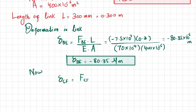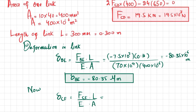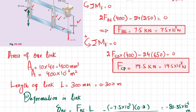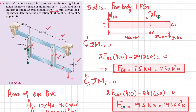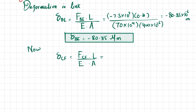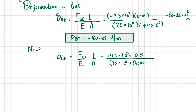Similarly, the deformation in link CF: δ_CF = F_CF × L / (E × A) = 19.5 × 10³ × 0.3 / (70 × 10⁹ × 400 × 10⁻⁶), which gives 208.93 × 10⁻⁶ m, or 208.93 micrometers.